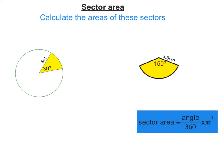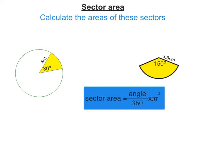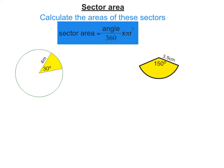In this video, we're going to calculate the area of the yellow sectors. We need to use a formula. Now you won't be given this in your National 5 exam, so you need to remember that sector area equals angle over 360 times pi r squared.